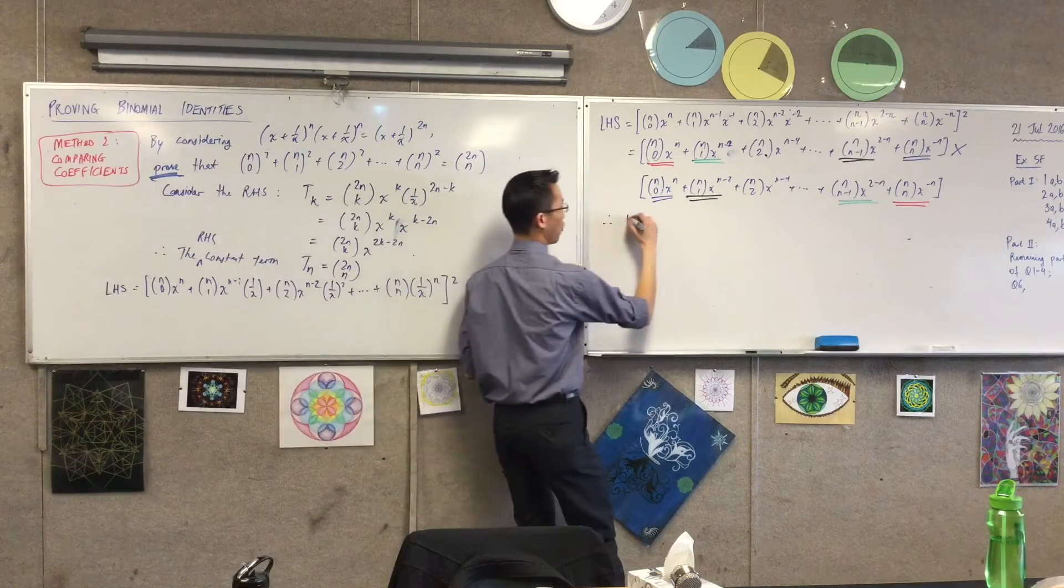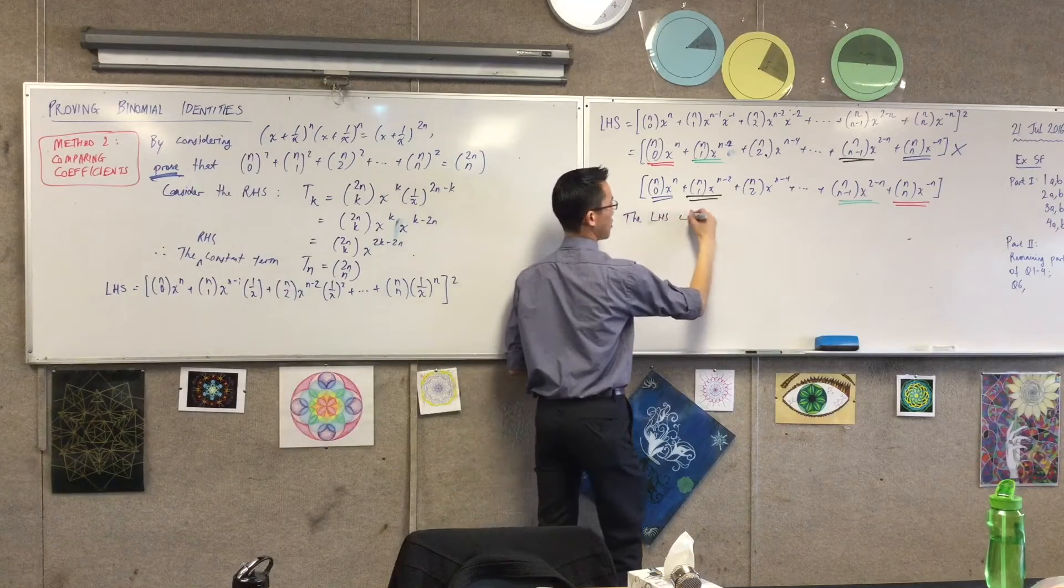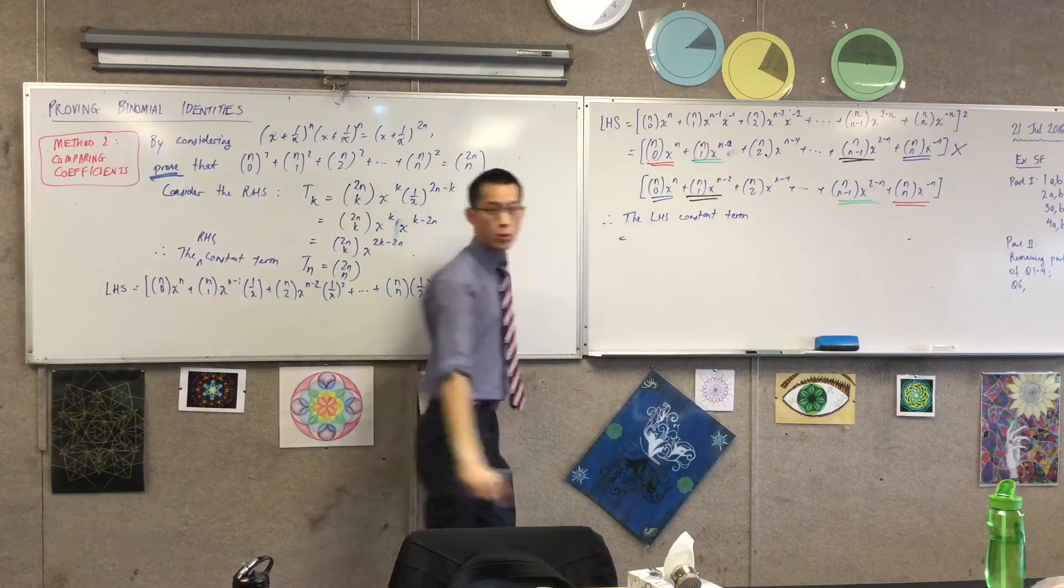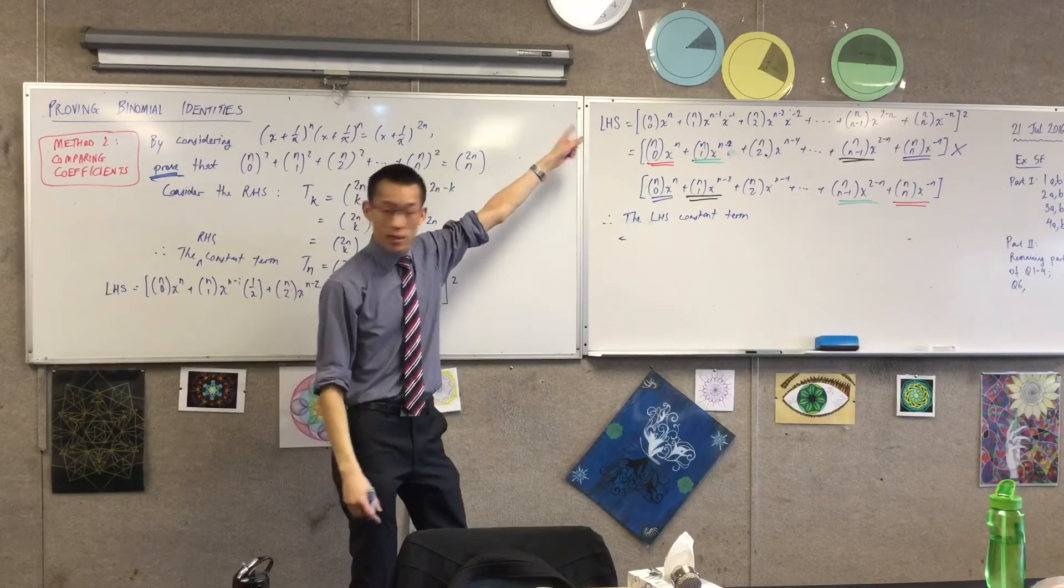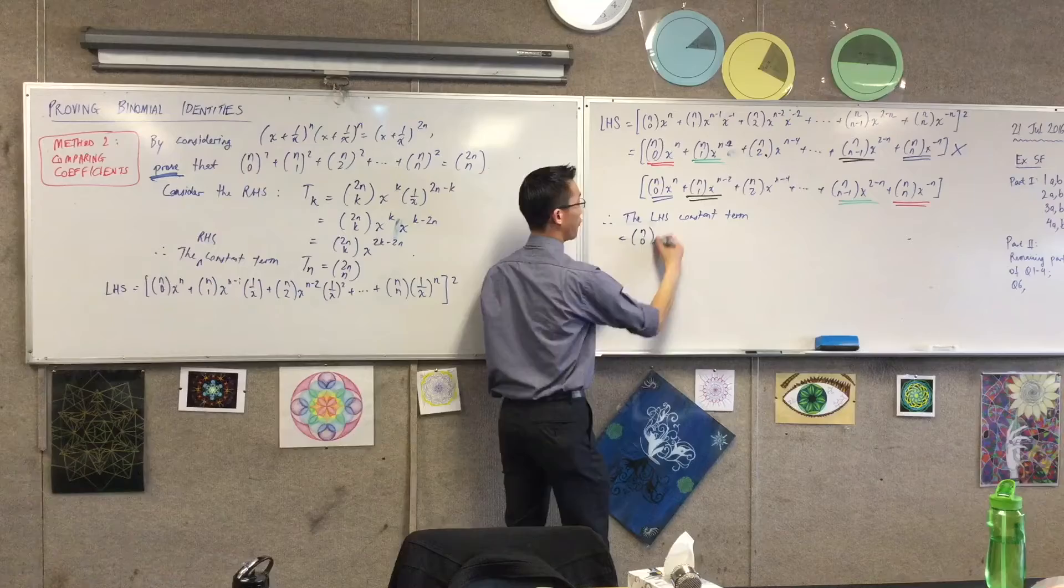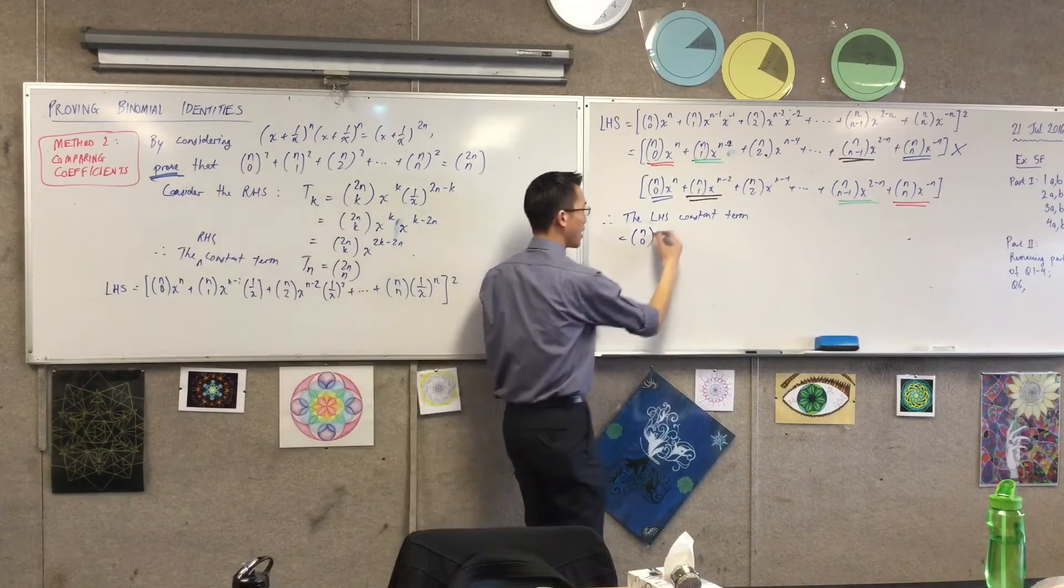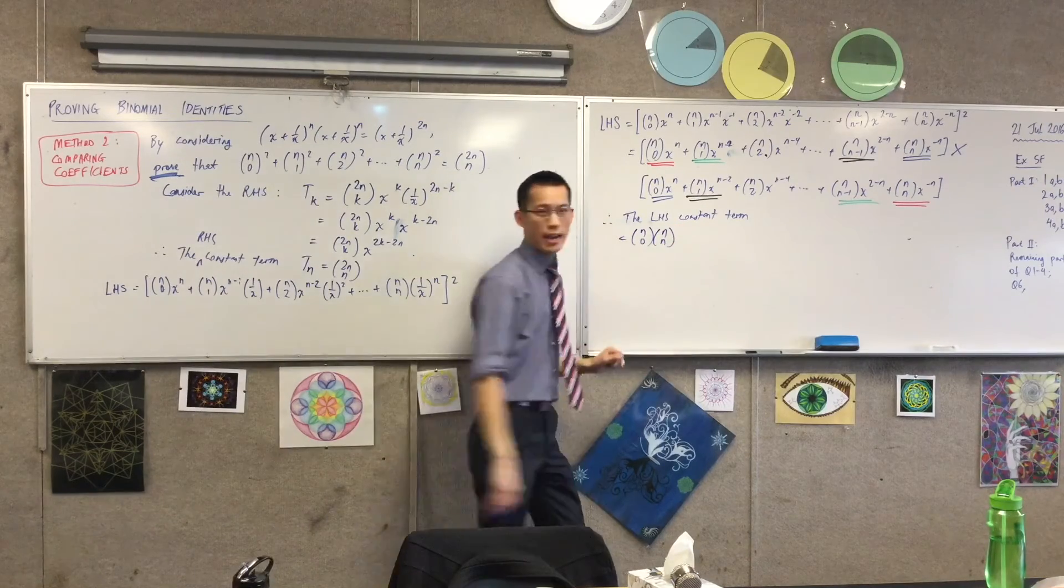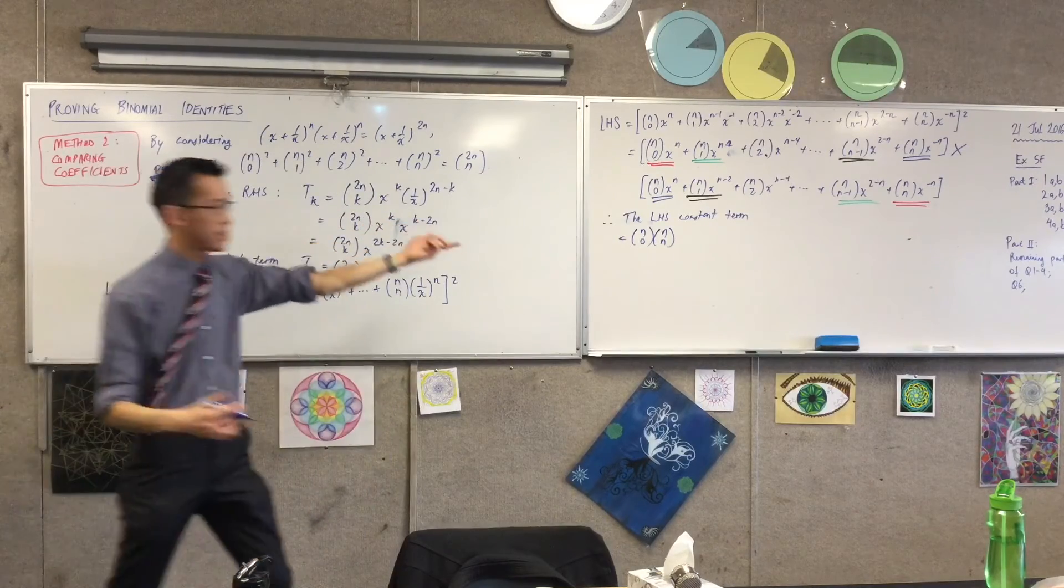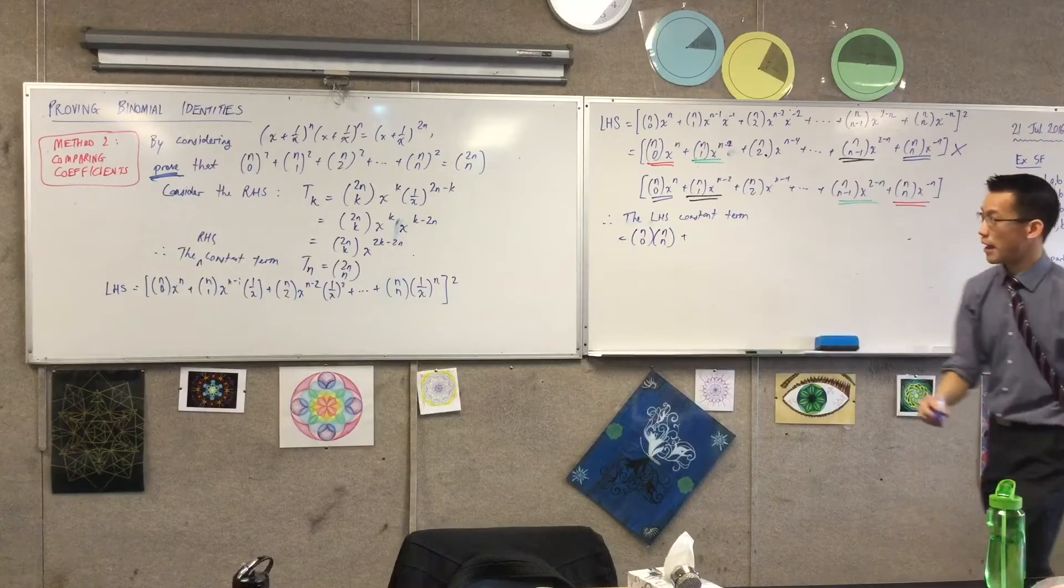So therefore, the left hand side constant term is equal to... Now, be careful. Let's go in the order. I started with the first one here and the last one there. I'm going to get a binomial coefficient here, and then I get another binomial coefficient there. And then what happens to those x's again? They cancel, which is the whole point. This is the left hand side constant term. So there's my first pair.